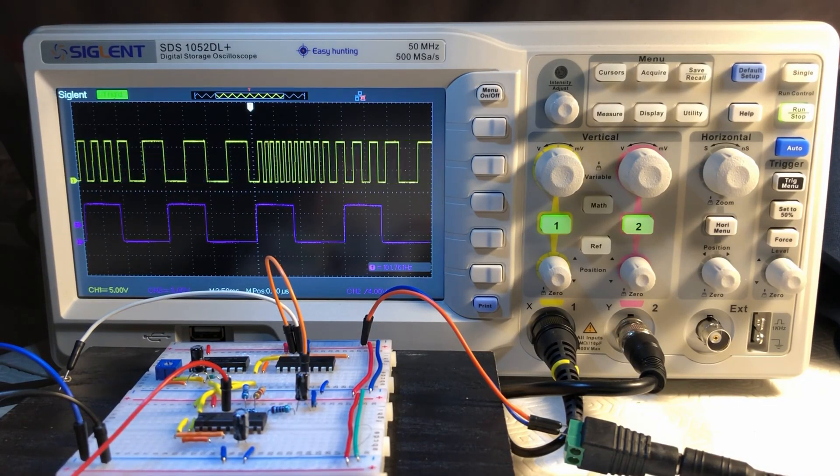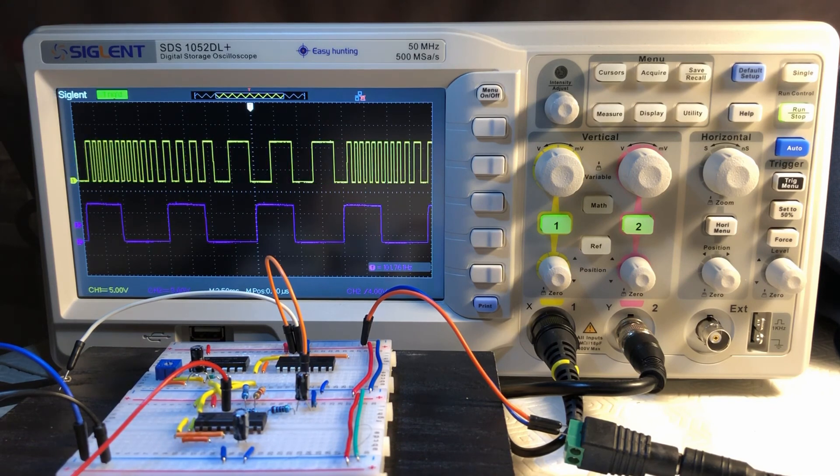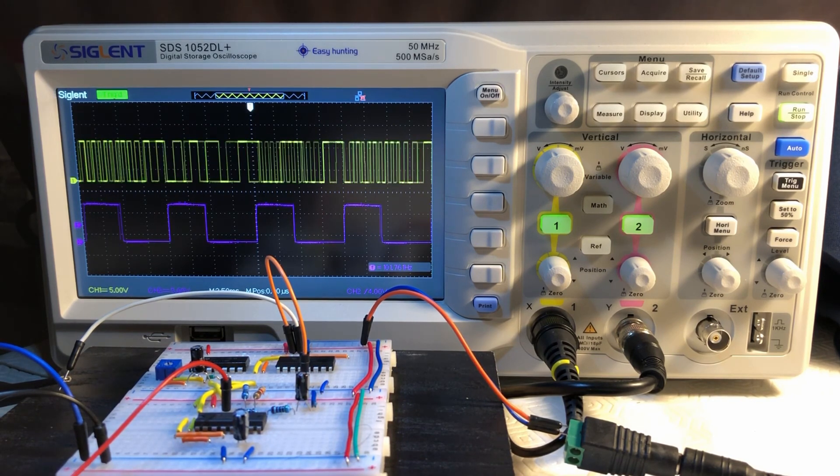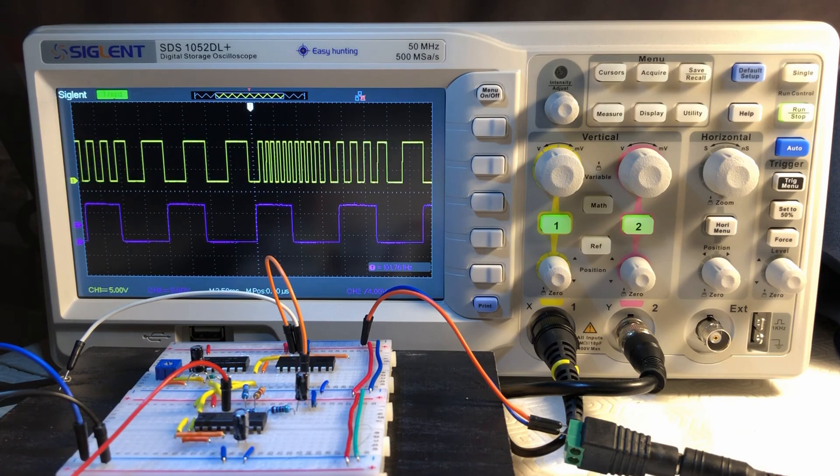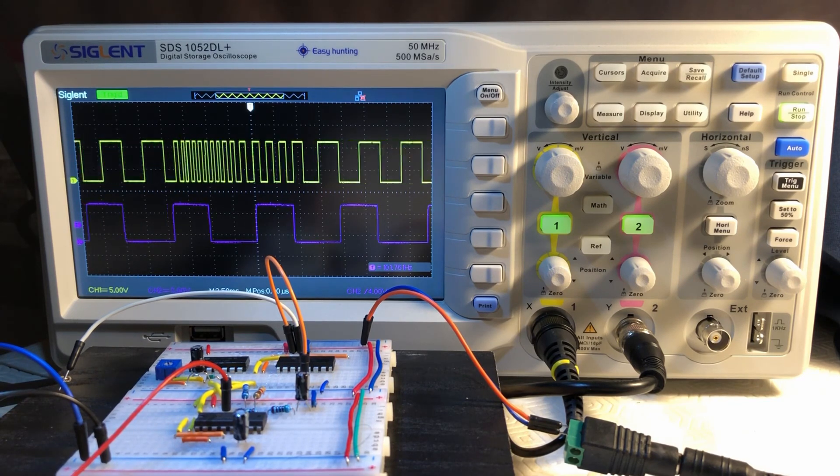The phase locked loop circuit will be used as a demodulator to demodulate FM signals. Thank you for watching.